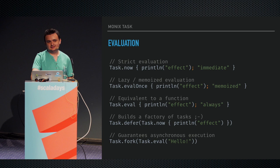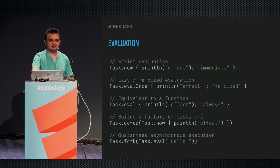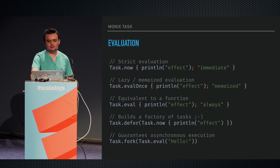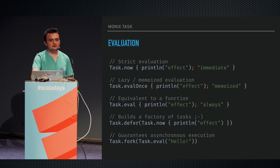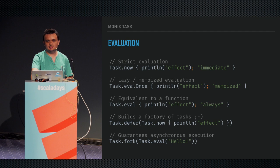About controlling evaluation — here are a couple of samples. Task.now initiates an already completed value, equivalent to Future.successful. Eval.once is equivalent to lazy val in Scala — evaluated on the first runAsync, giving you idempotency guarantees. Eval behaves like a function, so that logic gets called each time you run. Defer also behaves like a function. Fork is an explicit fork — a runnable will be sent to the thread pool on JVM, or on JavaScript it triggers a setTimeout to do execution asynchronously.